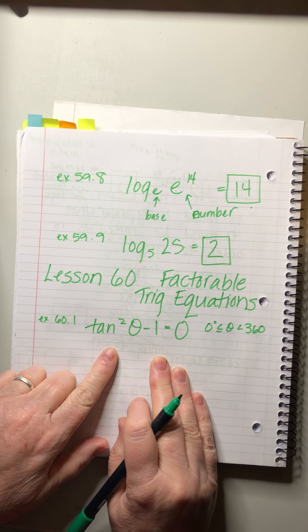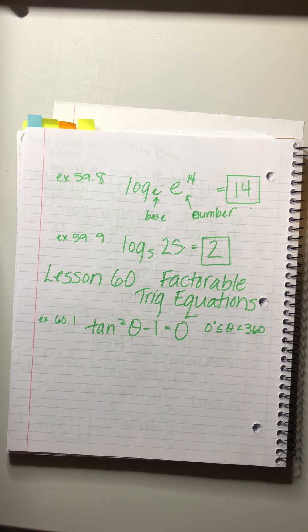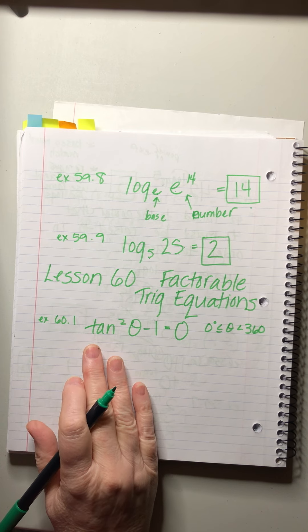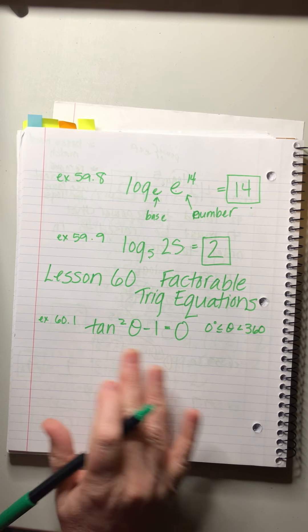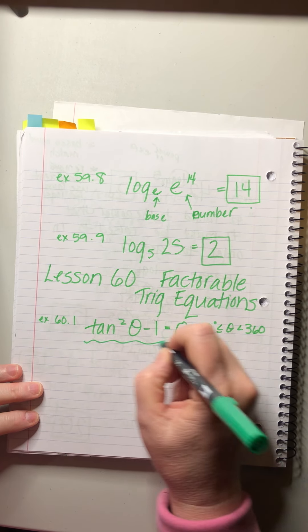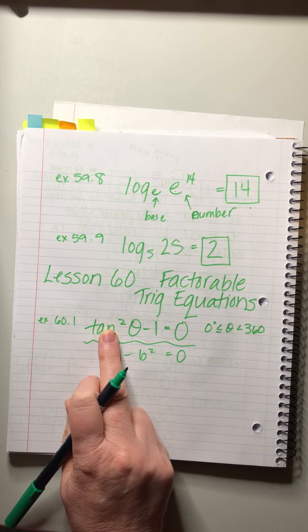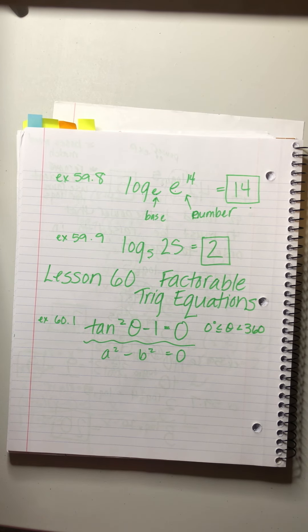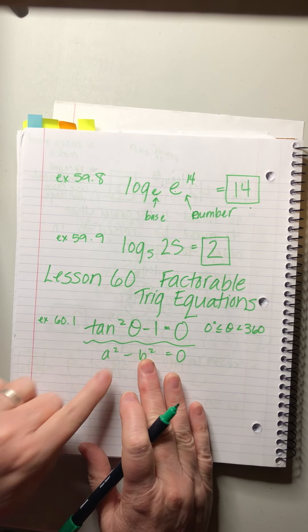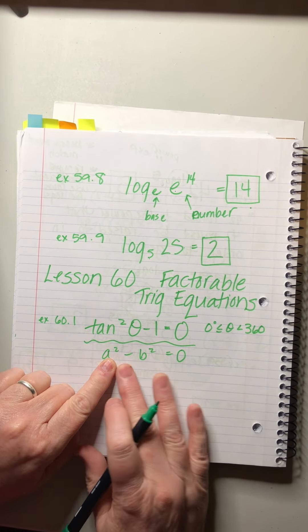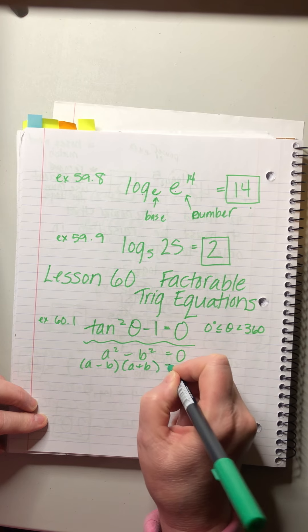We have a trig equation, and when we look at it we can see this actually fits the form of a difference of two squares: a² minus b² equals zero. That's a perfect square and that's a perfect square, so we can factor it just the way we would factor a² - b², doing (a - b)(a + b).